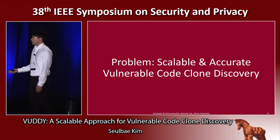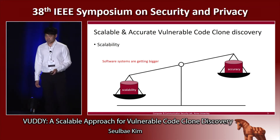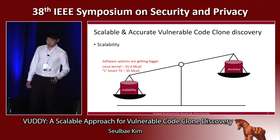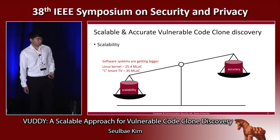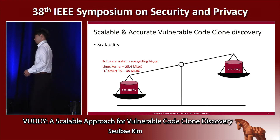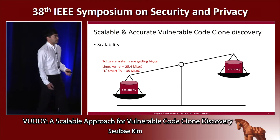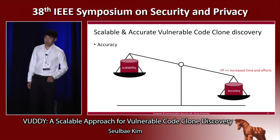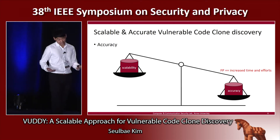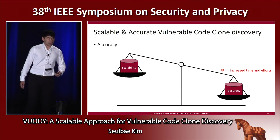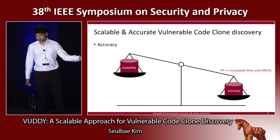So that means we have a lot of vulnerable code clones in the real world. The problem we want to tackle is the scalable and accurate detection of vulnerable code clones. Scalability is important because software systems are getting bigger and bigger. For example, the Linux kernel has more than 25.4 million lines of code, and a smart TV firmware consists of more than 35 million lines of code, containing the Linux kernel, Chromium OS, and many software libraries. We need a scalable system to efficiently detect vulnerabilities from these large softwares. Accuracy is also obviously important because false positives lead to increased effort and time for researchers to manually go through every false alarm.